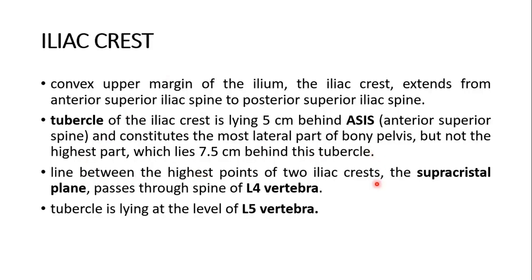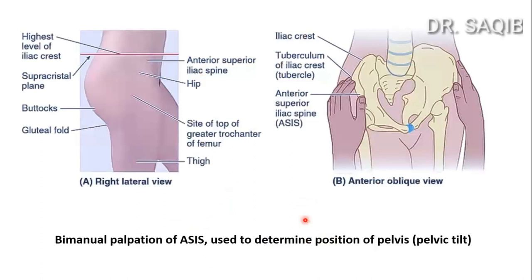The line between the highest points of the two iliac crests — the supracrestal plane — passes through the spine of the L4 vertebra. The tubercle is lying at the level of the L5 vertebra. Bimanual palpation of the anterior superior iliac spine is used to determine the position of the pelvic tilt. This is the supracrestal plane and this is the tubercle of the iliac crest, with the anterior superior iliac spine visible.